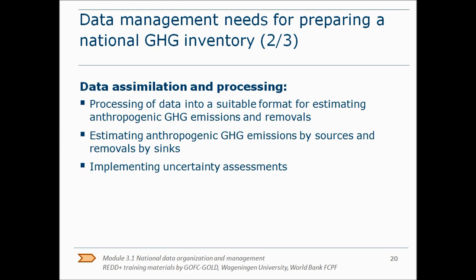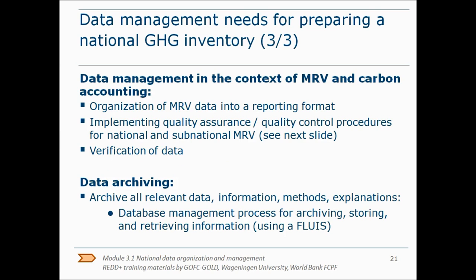Data assimilation and processing includes processing of the data into a format that can be used for estimation of greenhouse gas emissions and removals. Then the actual emissions and removals can be estimated. It is important to perform uncertainty assessments related to emissions estimates. When a country wants to report carbon emissions and removals, the first thing to do is to organise the MRV data into a reporting format. Module 3.3 gives more information on how to do this. Implementing quality assurance and quality control procedures and verification of the reported data is very important. Finally, a country needs to archive all relevant data, information, methods, and explanations. A FLUIS can be very helpful to do this.